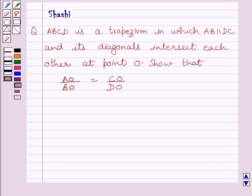Hi and welcome to the session. I am Shashi and I am going to help you with the following question. ABCD is a trapezium in which AB is parallel to DC and its diagonals intersect each other at point O. Show that AO upon BO is equal to CO upon DO.